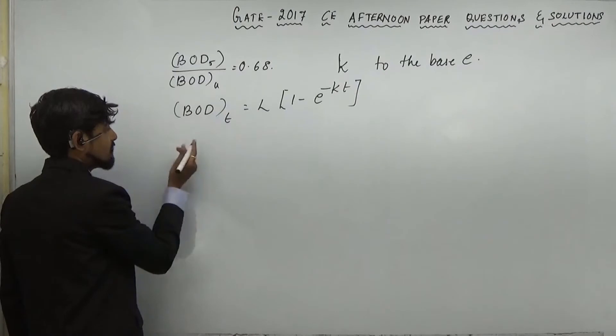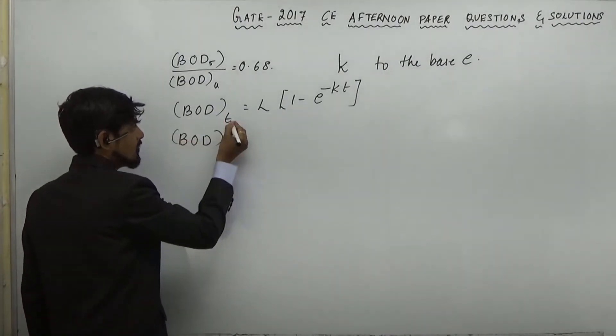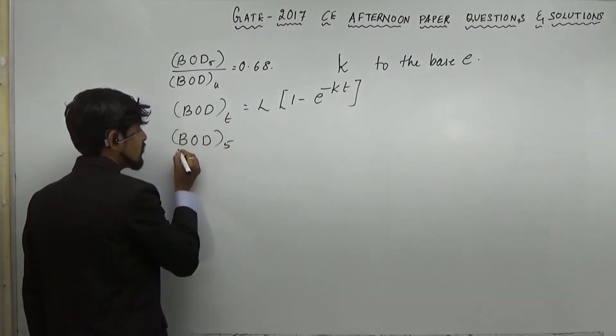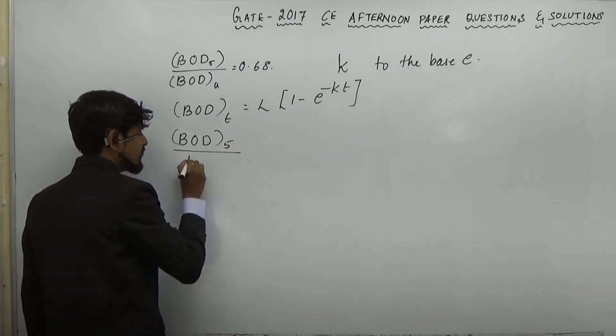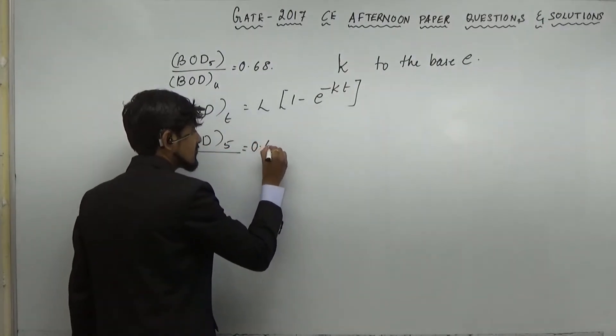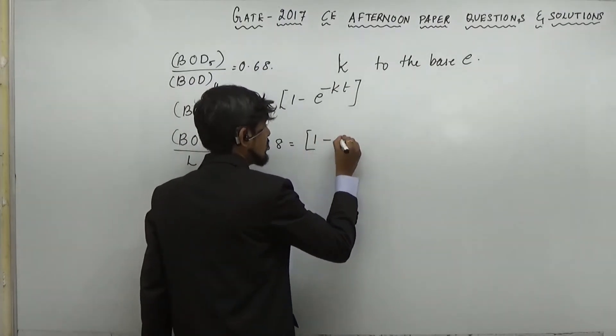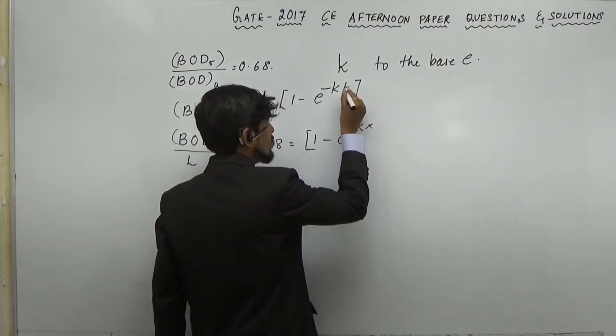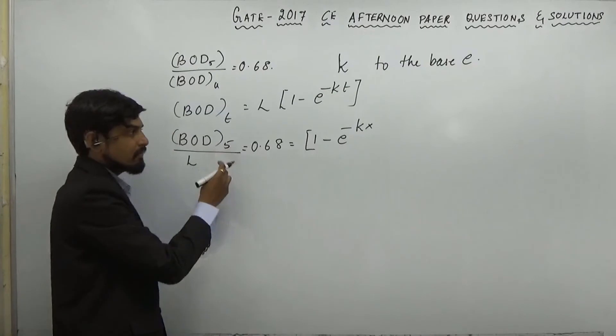So, I will take it to the left hand side. BOD5 divided by ultimate BOD, that is L, is equal to 0.68, that is equal to 1 minus E raised to minus K into T. Time T here is 5 days.